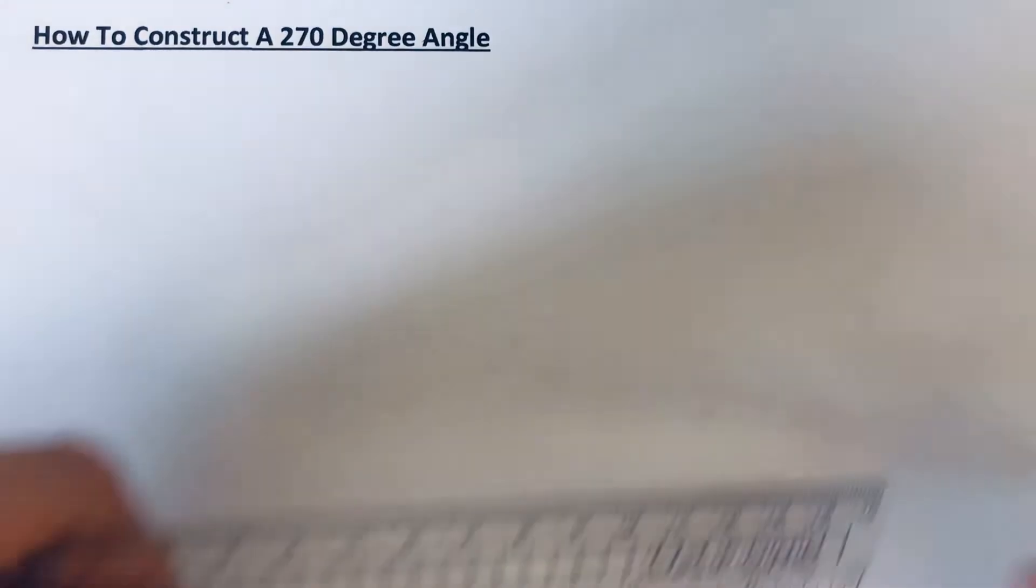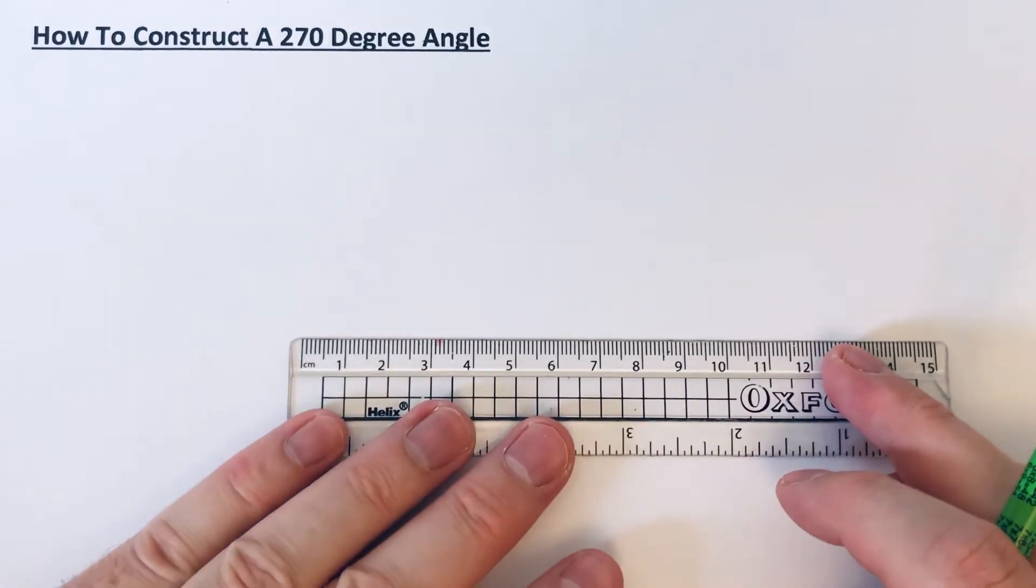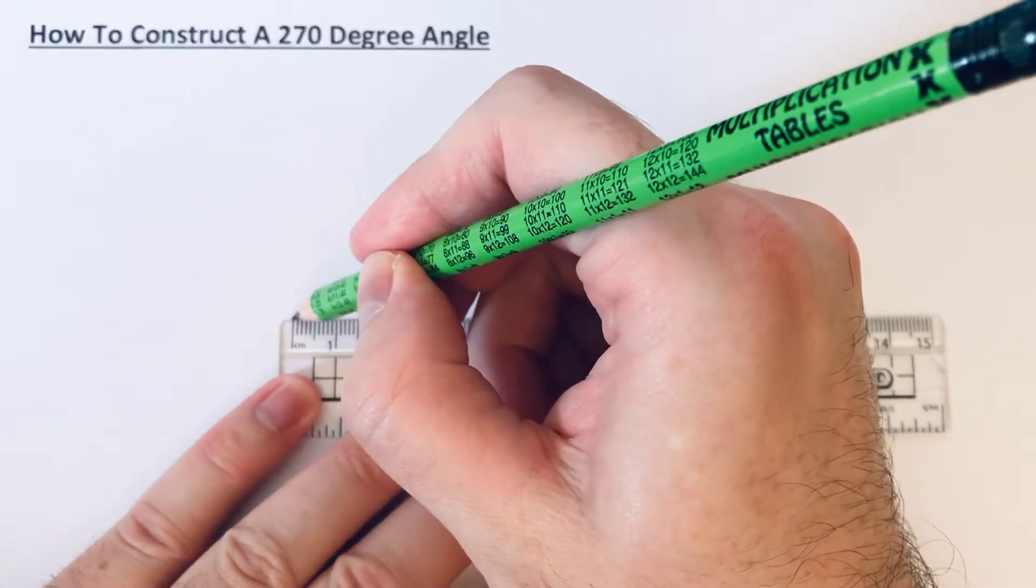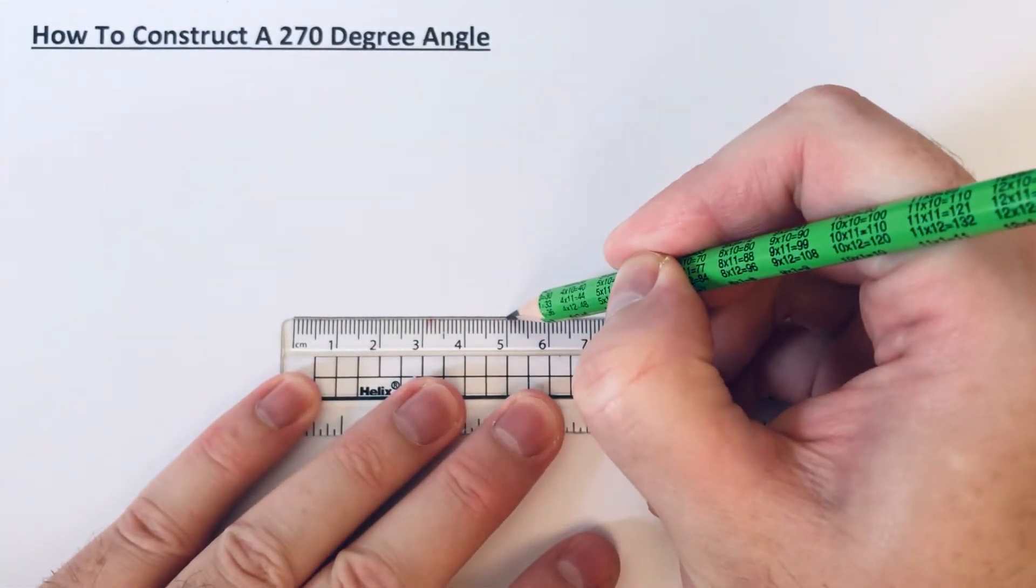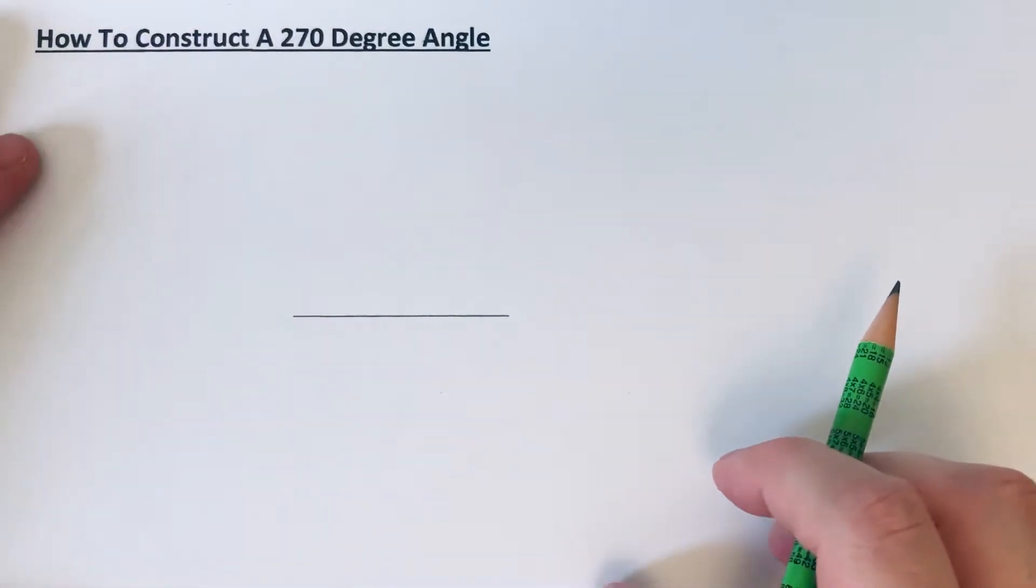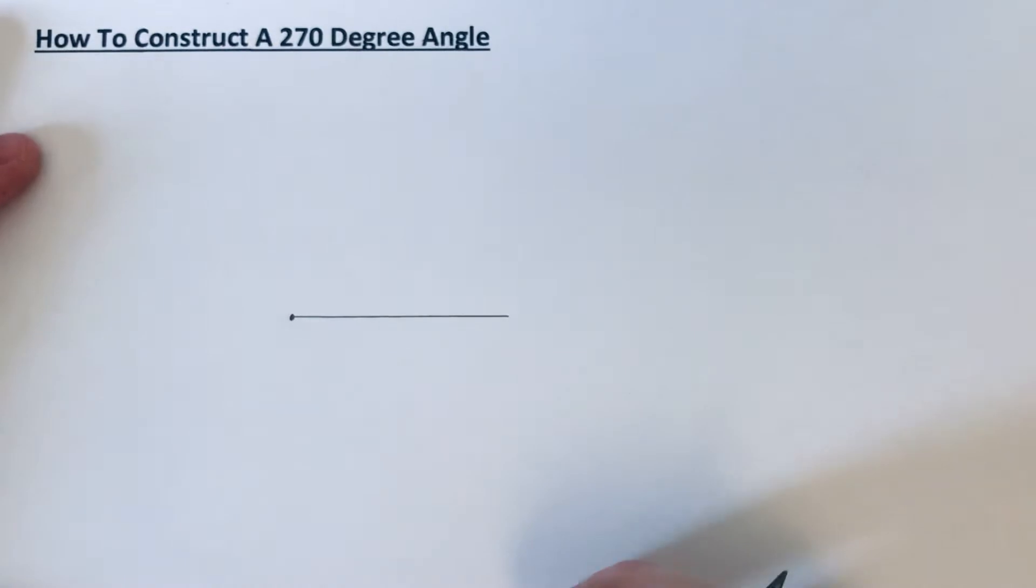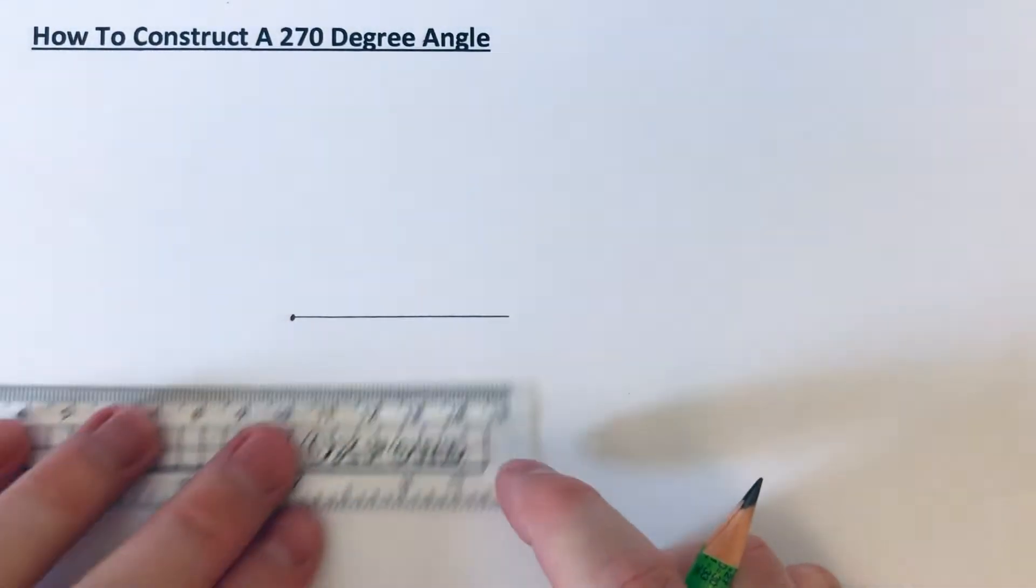Let me show you how to do this. Start off with a line about five centimeters long. I'm going to make the angle on the left side of the line.